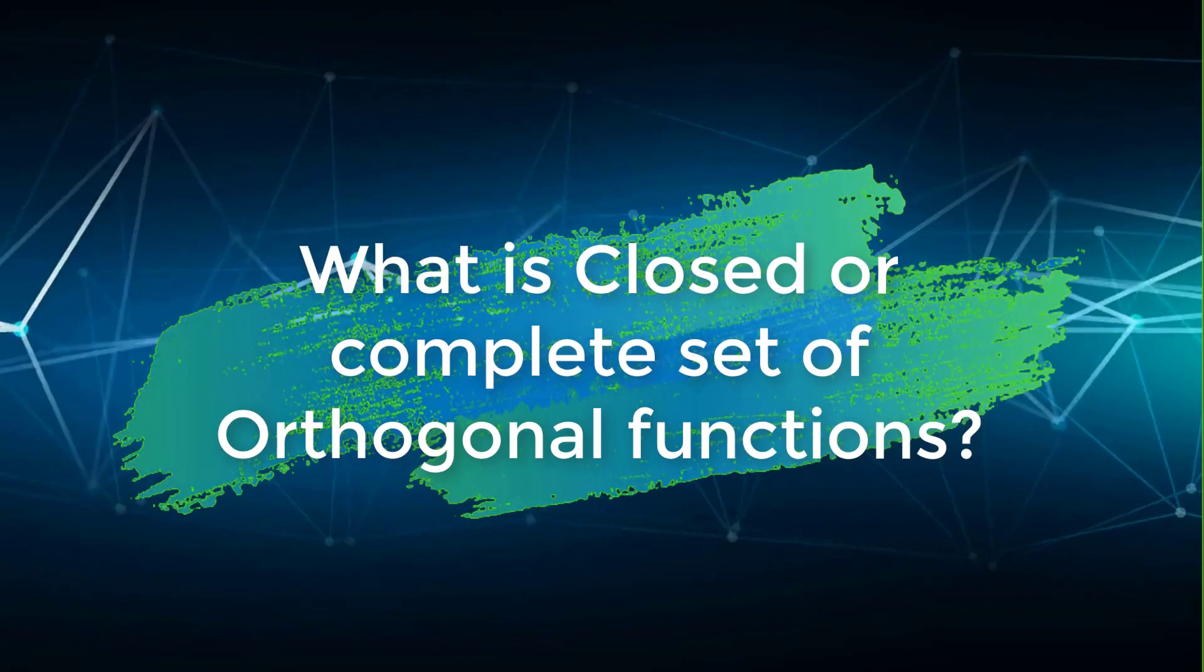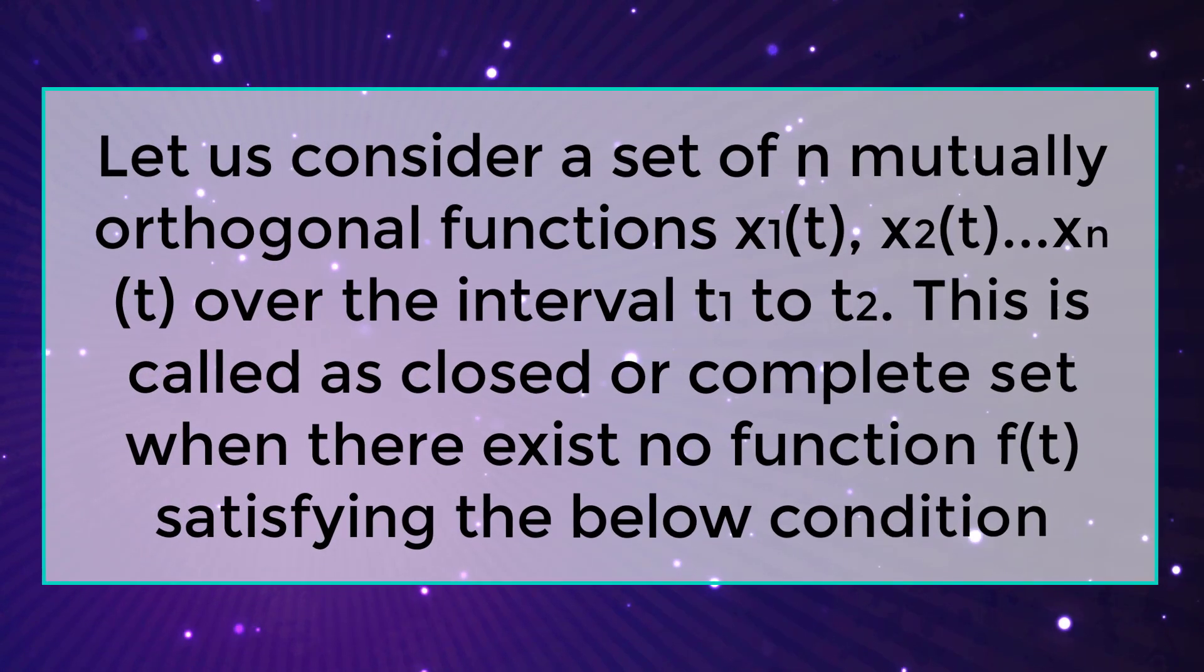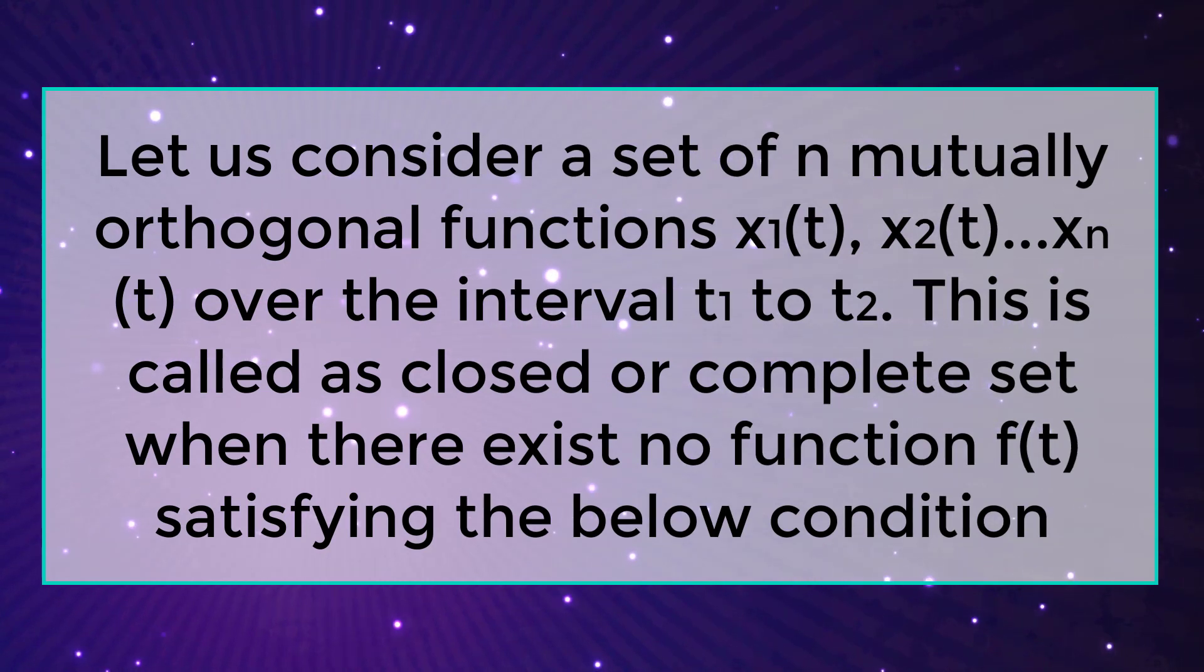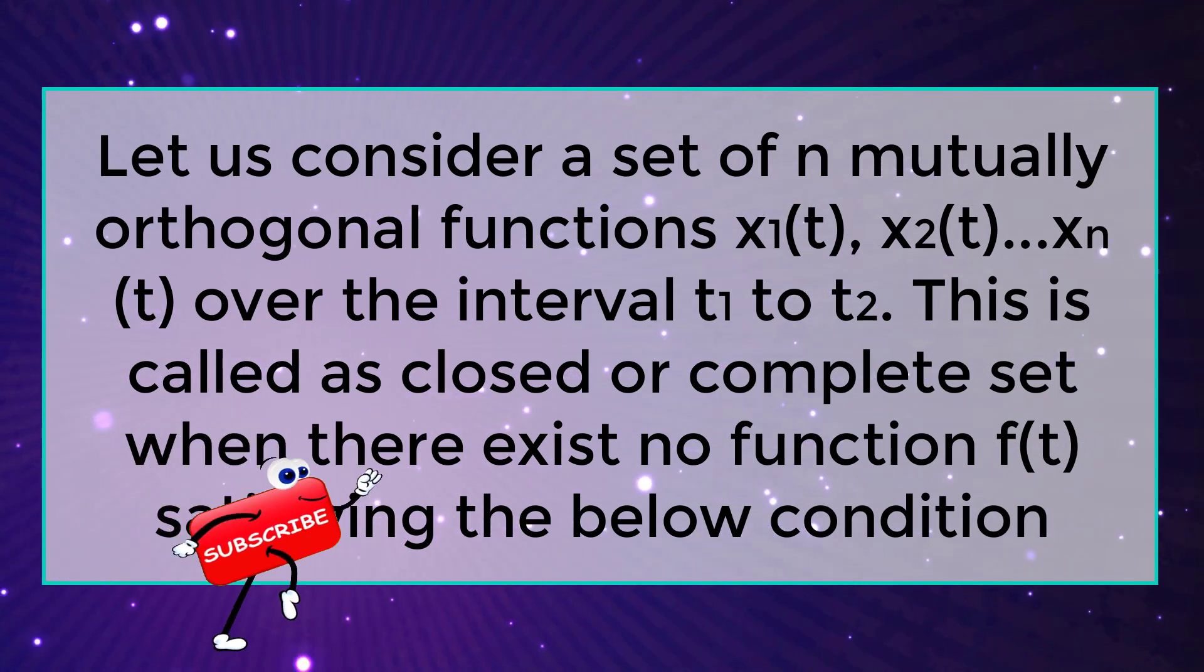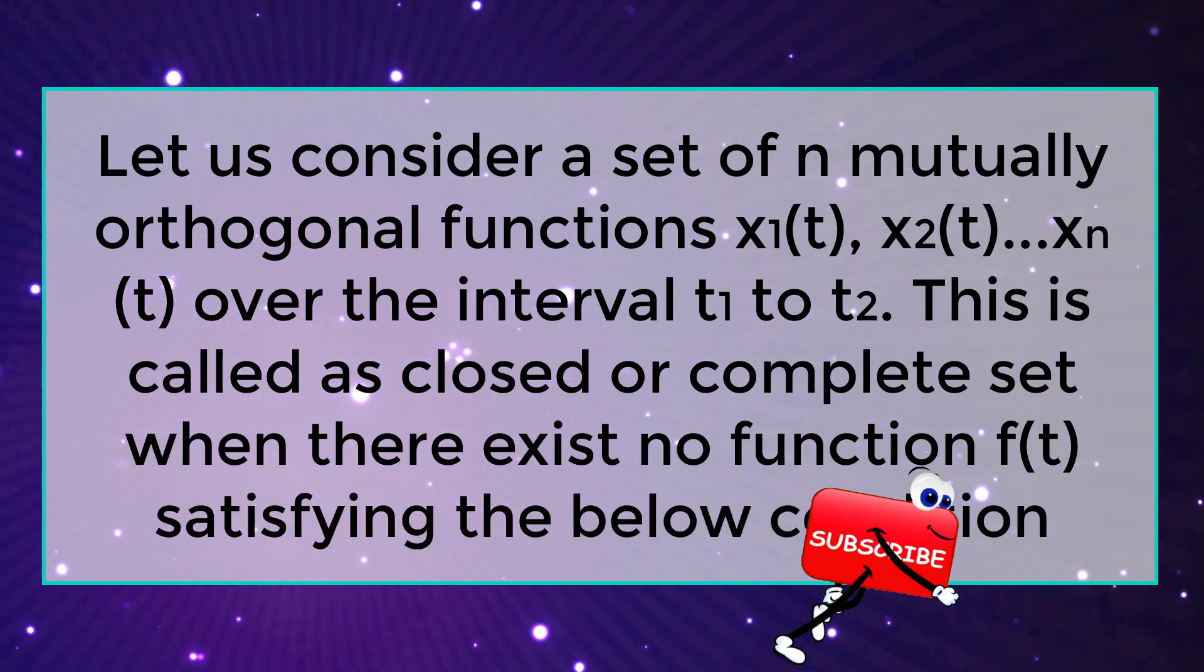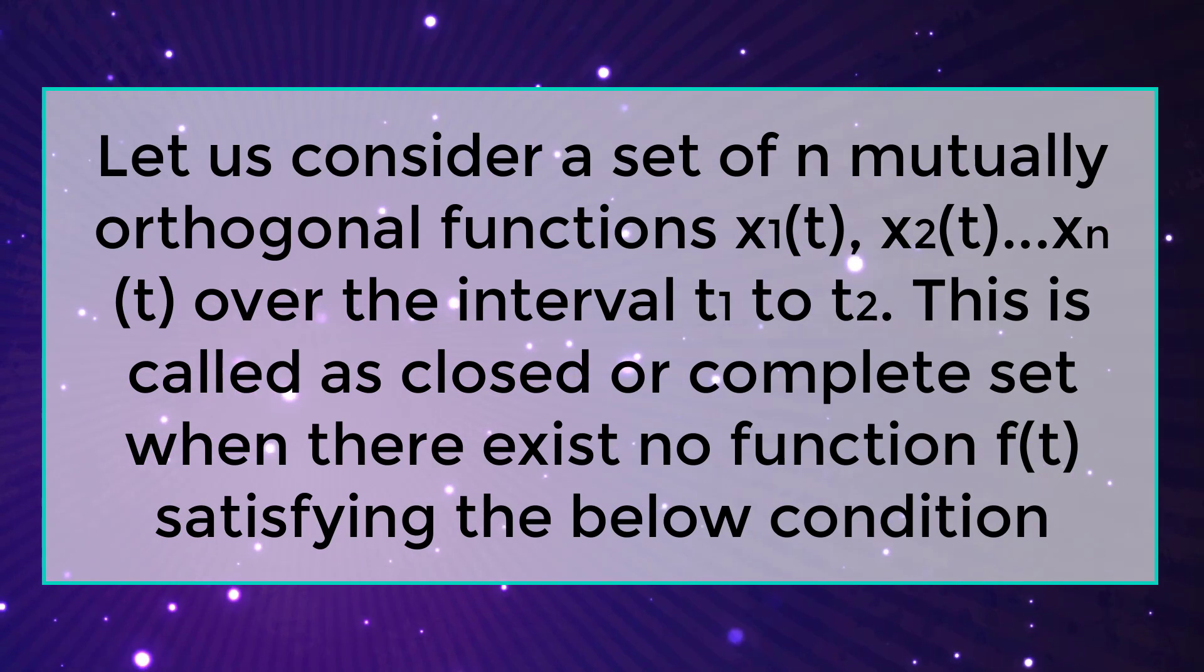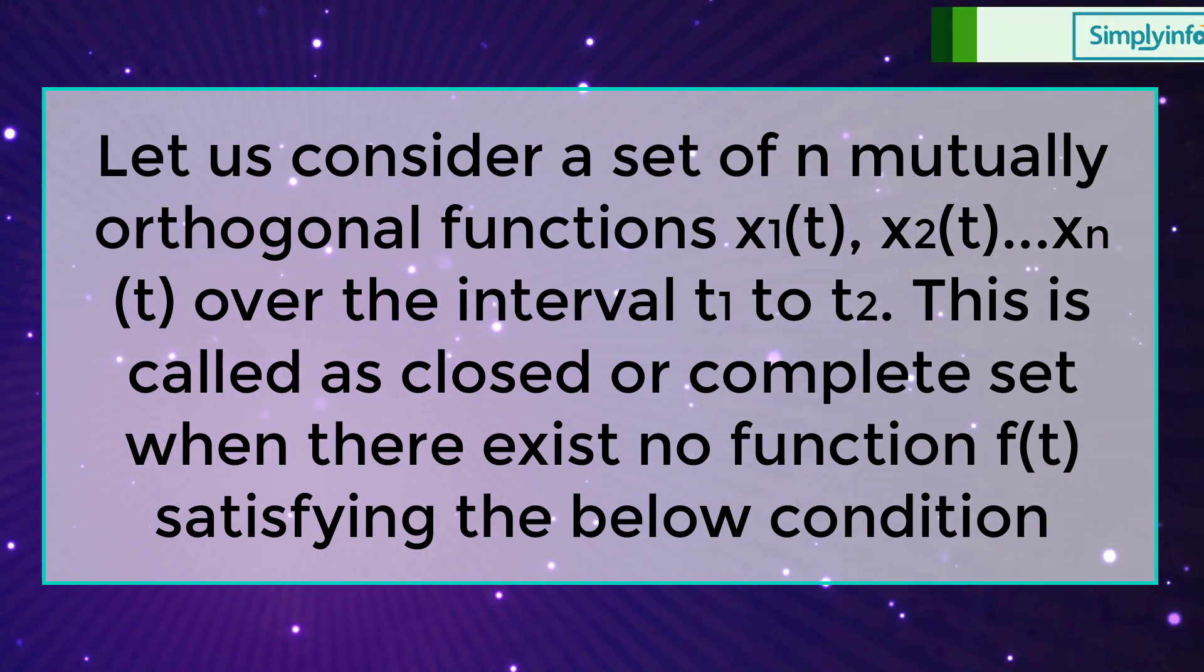What is a closed or complete set of orthogonal functions? Let us consider a set of n mutually orthogonal functions x1(t), x2(t)...xn(t) over the interval t1 to t2. This is called a closed or complete set when there exists no function f(t) satisfying the below condition.